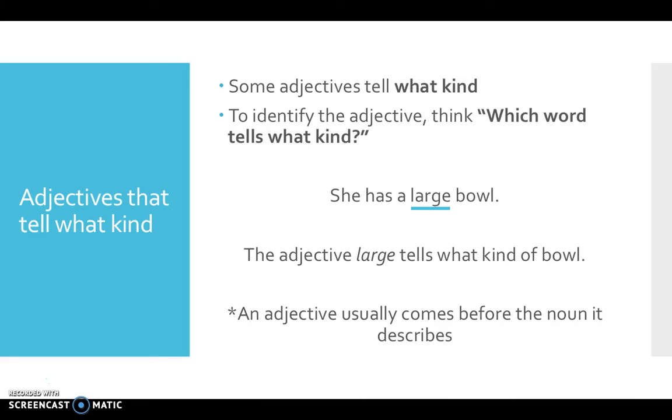Here's a hint: An adjective usually comes before the noun it describes. Sometimes it comes after it, but mostly it comes before it. So that's a really good trick when identifying adjectives.